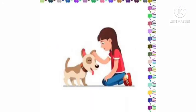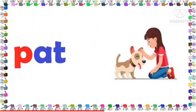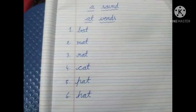My children, can you tell me what the girl is doing with the dog? This kind of approach is called pat — the girl is patting the dog. The word is pat. Spell after me: P-A-T, pat.